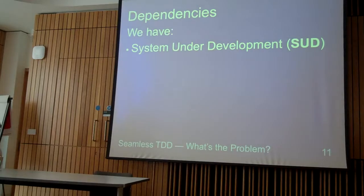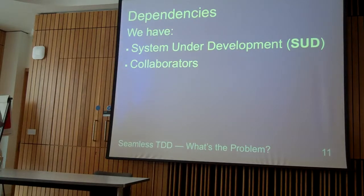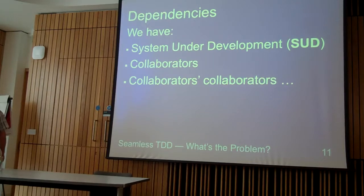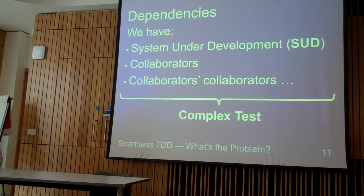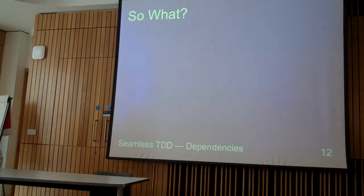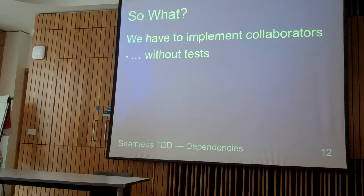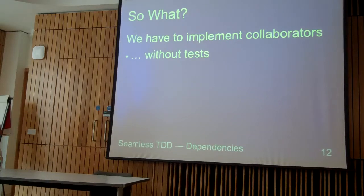We have a system under development — a master follower called it system under tests. But I think in the context of test-driven development, that would be a better name. So, we have two collaborators, which are the objects that are needed for our system to work properly. And even worse, we have collaborators that are not collaborators. In general, this makes our tests complex. We have to implement the operators, and usually we can't write tests for them, so we implement in the context of tests for a system we are developing now. But operators are a different kind of object, and that's why we lose focus on our system under development. So, we have a regression.